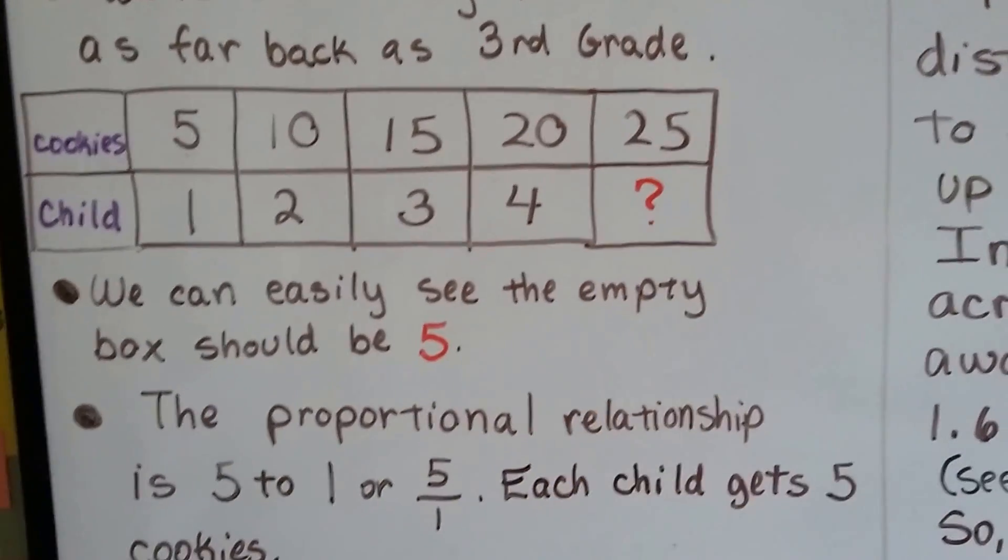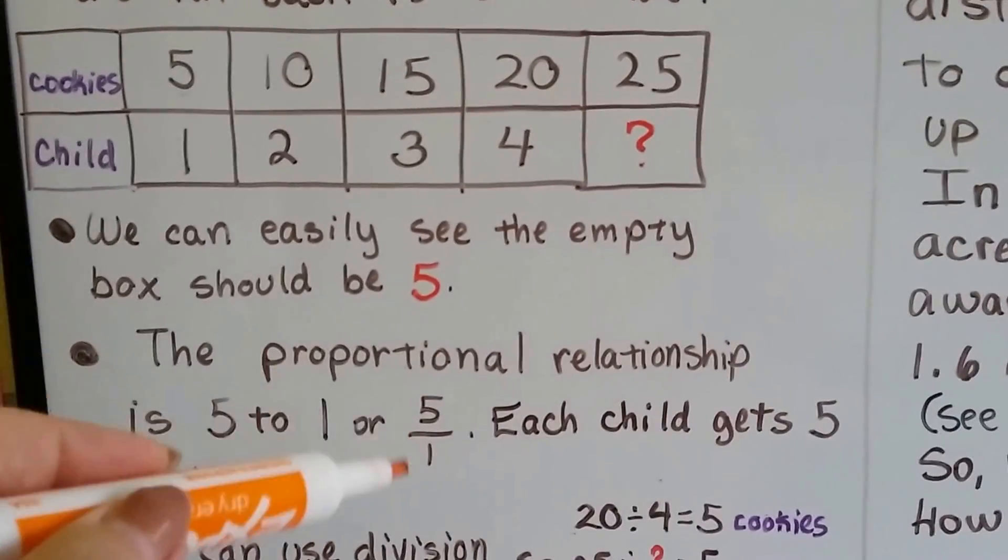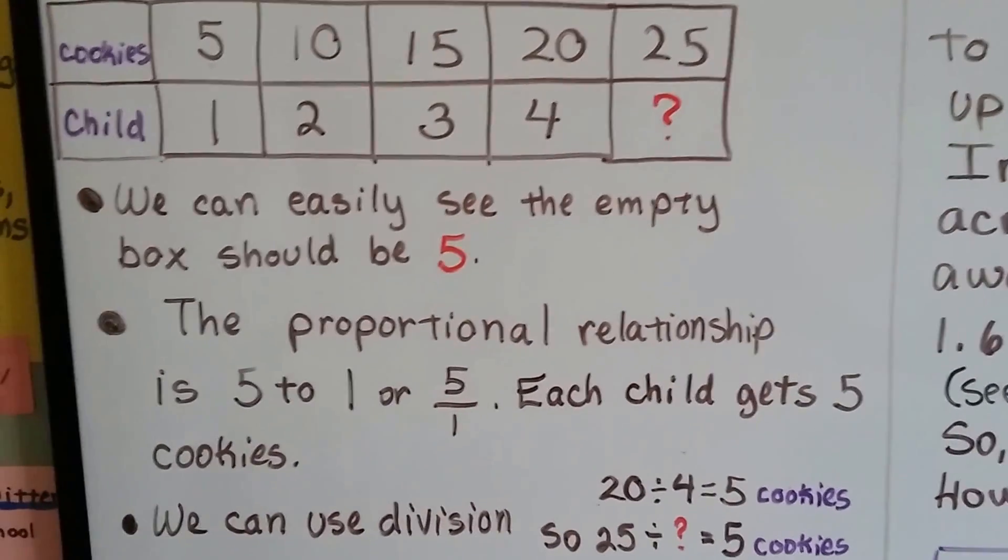We can easily see the empty box should be 5. The proportional relationship is 5 to 1, or 5 over 1 as a fraction. Each child gets 5 cookies.